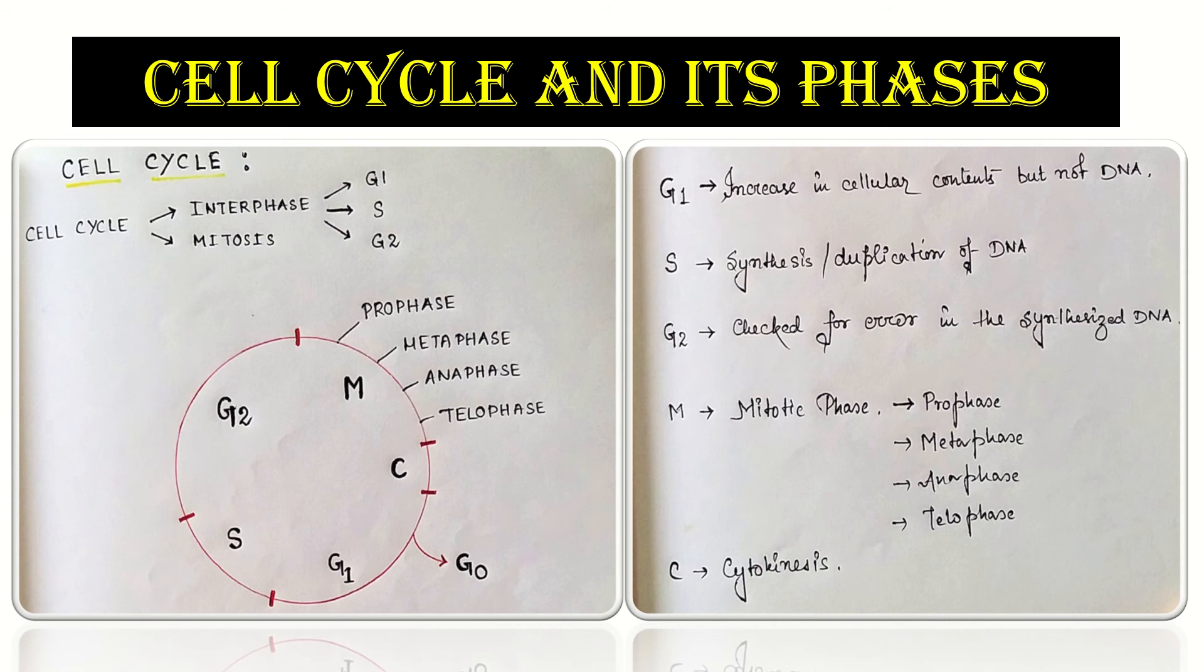Mitosis has got four parts to it: prophase, metaphase, anaphase and telophase. Now what is this C signifying? C signifies cytokinesis. Before cytokinesis, whatever is happening, it is part of karyokinesis. Karyokinesis is all related to the nucleus and cytokinesis is after karyokinesis, the cell becomes two from one.